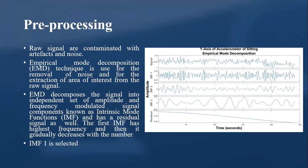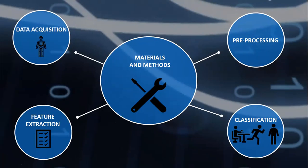EMD decomposes the signal into independent sets of amplitude and frequency modulated signal components known as intrinsic mode functions, IMF, and has a residual signal as well. The first IMF has the highest frequency and then it gradually decreases with number. Since there is need to remove low frequency signal because they contain noise, we selected the first IMF-1 for feature extraction.